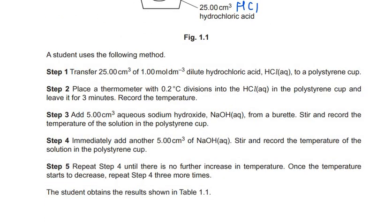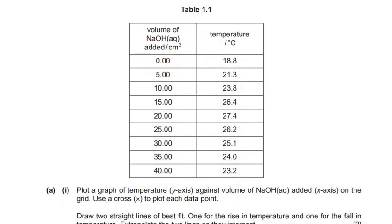Here is the method the student uses. You can always pause the video and read all the steps where the procedure is described. You record the temperature of the polystyrene cup and repeat step 4 until there is no further increase in temperature. Once the temperature starts to decrease, repeat step 4 three more times. Every time 5 cm³ of sodium hydroxide is added, the temperature is measured.